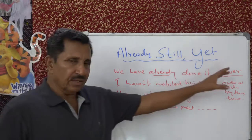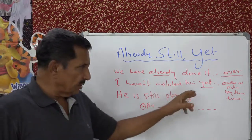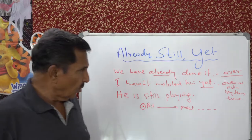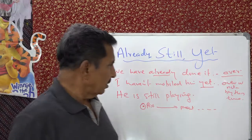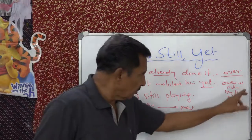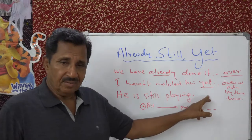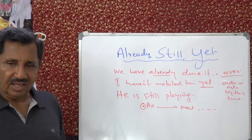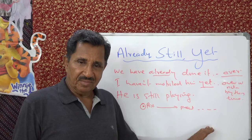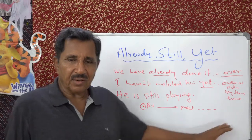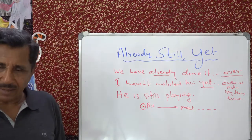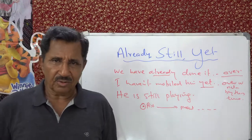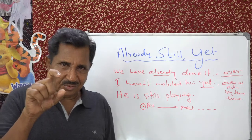Once again: 'already' means everything is over, no question. 'Yet' is used only in negatives and questions, meaning the action is not over by this time — you are waiting. Has he come yet? Means he hasn't come, we are waiting. 'Still' means continuing. It's simple, but sometimes you get confused, which is why I explained the use of these three words.